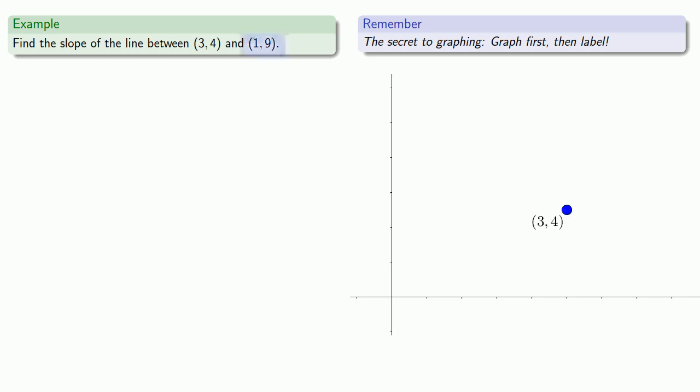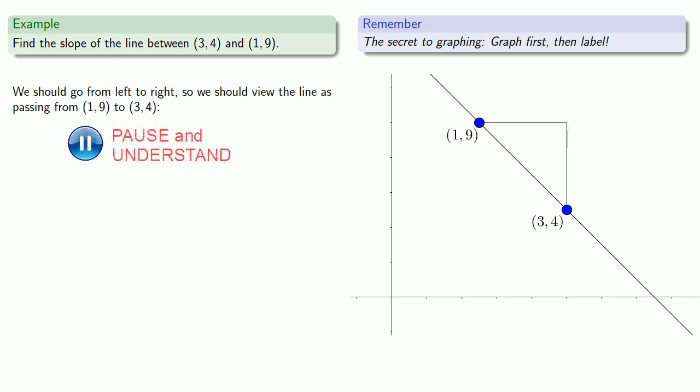The other point, (1, 9), is also out and up. But because our x-coordinate is less, we don't go out so far. And because our y-coordinate is greater, we'll go up further. That point might be here, labeled, and we'll draw our line. The first thing to recognize here is if we do want to go from left to right, we should view our line as running from (1, 9) to (3, 4).